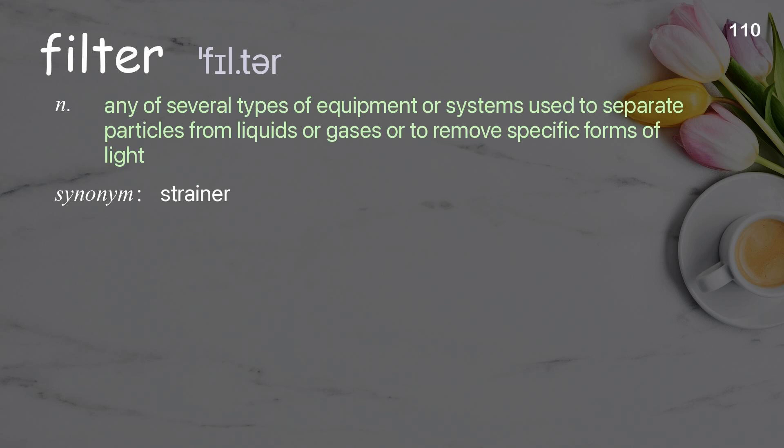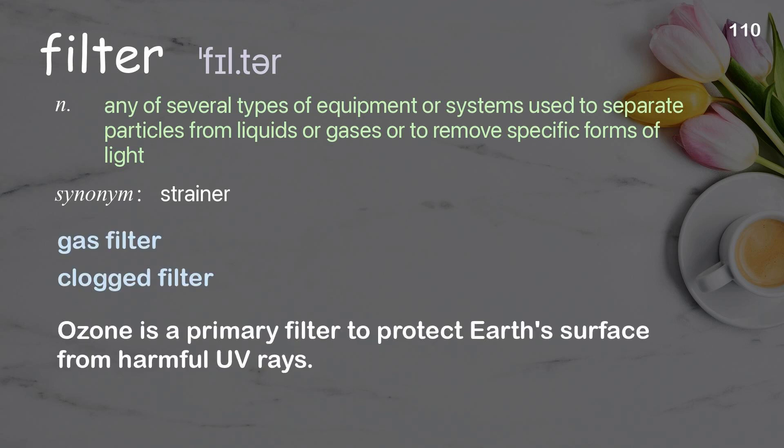Filter. Any of several types of equipment or systems used to separate particles from liquids or gases, or to remove specific forms of light. Examples: gas filter, clogged filter. Ozone is a primary filter to protect Earth's surface from harmful UV rays.